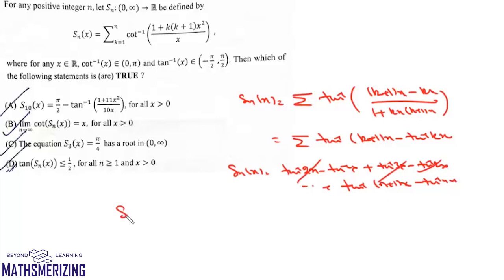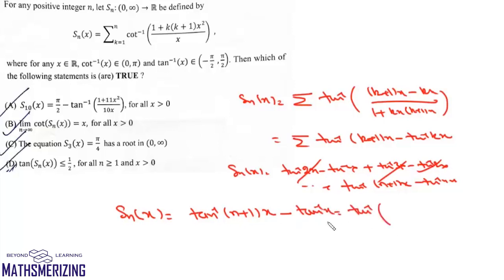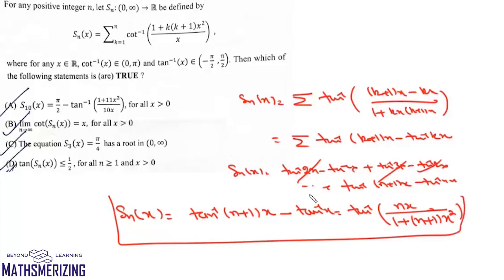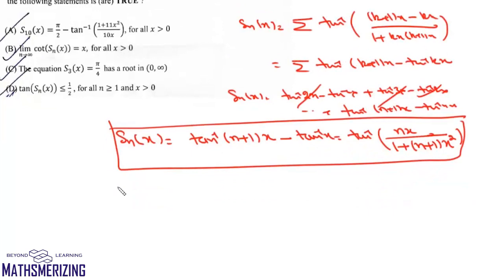All the intermediate terms cancel in the telescoping sum, so we get S_n(x) = tan inverse(n+1)x minus tan inverse(x). Applying the tan inverse(a - b) formula, this becomes tan inverse of (nx / (1 + (n+1)x²)). That is the closed form for S_n(x).